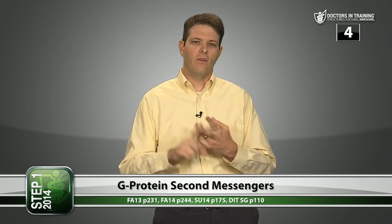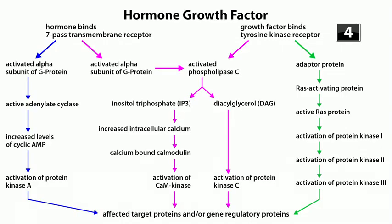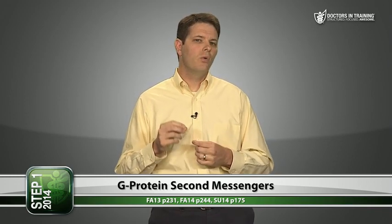Tyrosine kinase receptors are used not by dopamine or acetylcholine, but by things like insulin, prolactin, and growth factors — insulin-like growth factor, fibroblast growth factor, platelet-derived growth factor, and growth hormone. Tyrosine kinase receptors have two pathways: one similar to Gq that activates phospholipase C, and the more well-known Ras-activating pathway involving an adapter protein → Ras → protein kinases 1, 2, and 3. This is a four-star topic — know the difference between Gq, Gs, and Gi, and be able to draw these pathways.